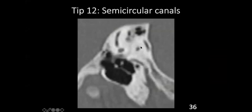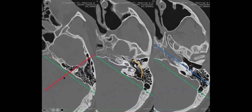On an axial CT scan, this picture shows the orientation of the semicircular canals. The superior semicircular is not seen as a complete circle because of its orientation. The lateral semicircular — most people will not have a problem identifying it on an axial section because it looks like a typical signet ring. We call it the signet ring appearance. The lateral dome of the lateral semicircular canal is parallel to the mastoid surface.